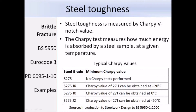Fracture toughness is measured by the Charpy v-notch value, and the Charpy test measures how much energy is absorbed by a steel sample at a given temperature. The table at the bottom gives some typical Charpy values. For grade S275 steel, there are no Charpy tests performed. For grade S275JR, a Charpy value of 27 joules is obtained at 20 degrees Celsius. For grade S275J0, a Charpy value of 27 joules is obtained at 0 degrees Celsius. For steel grade S275J2, 27 joules can be absorbed at a much lower temperature, meaning that the steel is much tougher than S275JR.